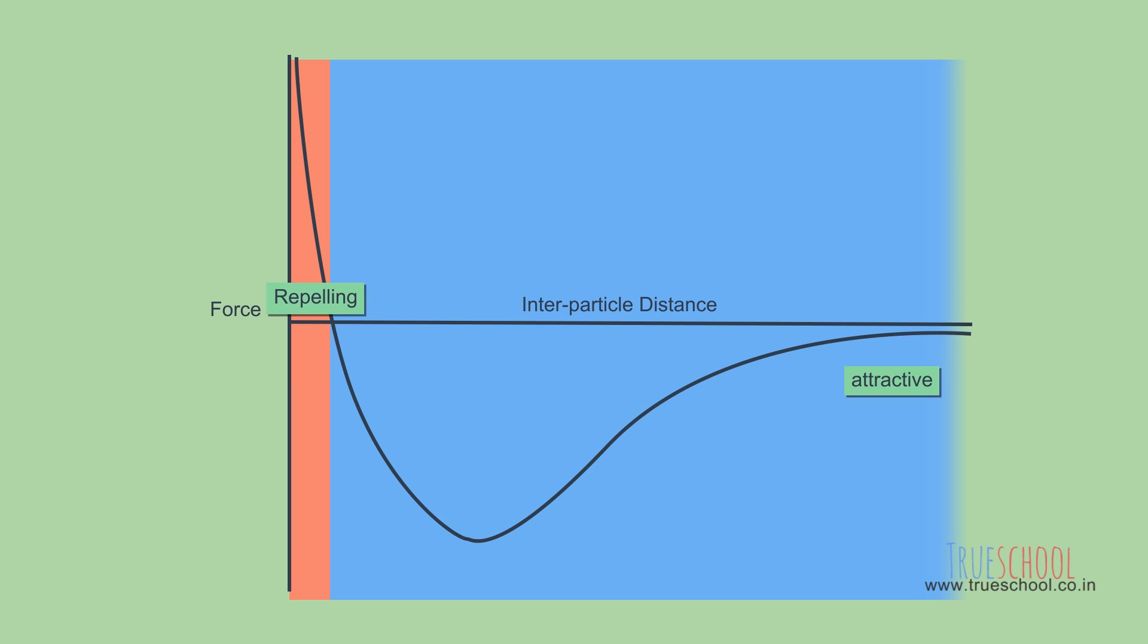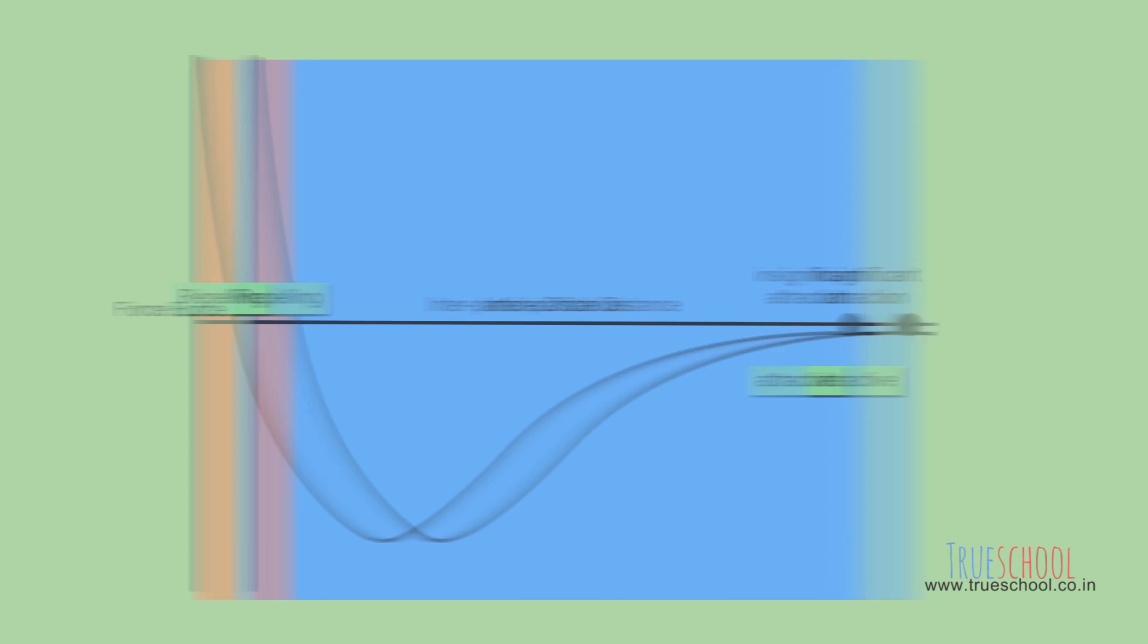These attractive forces are relatively long-range forces. Repulsion takes place only when the particles are very close to each other. These are very short range forces even on atomic scale, and when the gas particles are very far apart, that is at the right end of the graph, the attractive forces become insignificant.